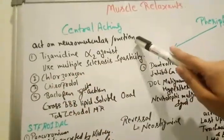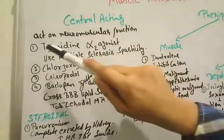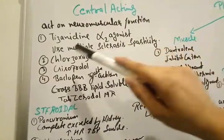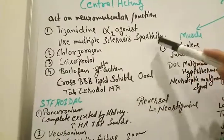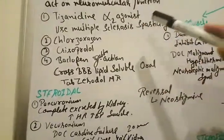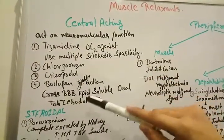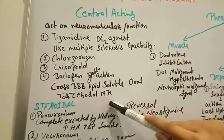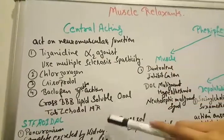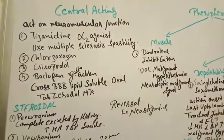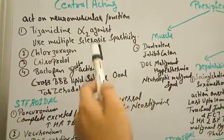It acts on neuromuscular junction. For example tizanidine, tizanidine is an alpha-2 agonist. We are going to use in spasticity, in multiple sclerosis or due to some neuropathies there is spasticity. For the treatment, tizanidine is included in the tablet of Zerodol-MR. We see aceclofenac, paracetamol and tizanidine component which is helpful to remove the spasticity.